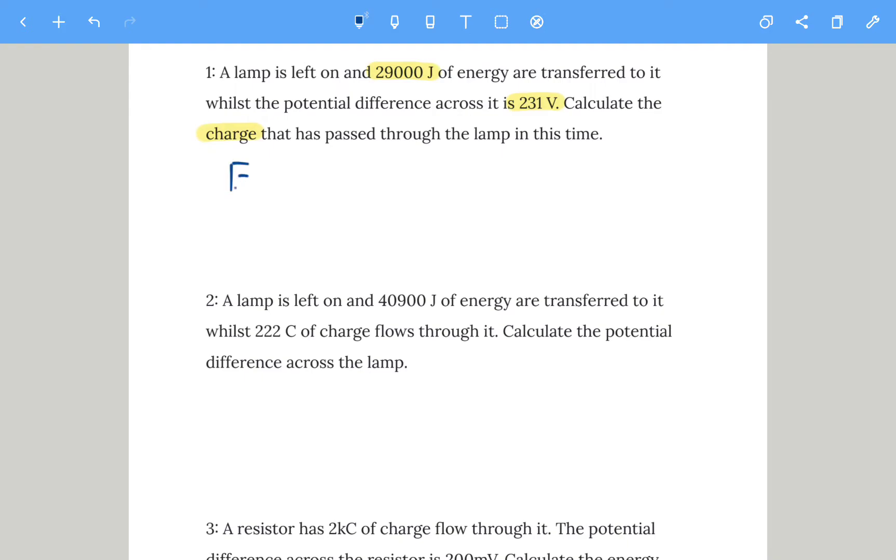So on this one, E equals charge times voltage. We want charge, so we need to get rid of the V that's connected to Q. The opposite of times V is dividing by V, so energy divided by voltage will give us the charge. That's 29,000 divided by 231, which gives 125.5 or 126 coulombs.